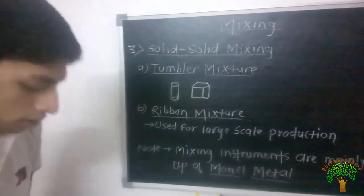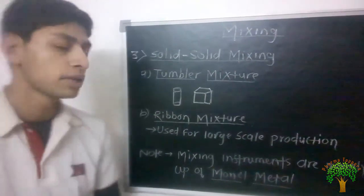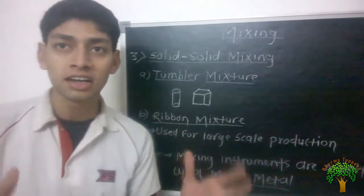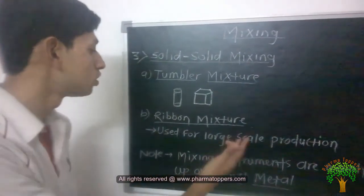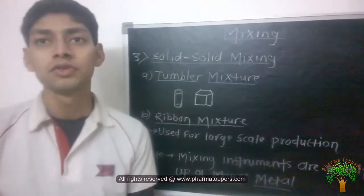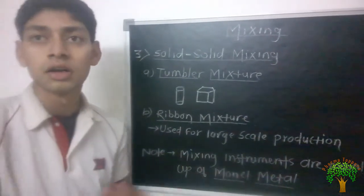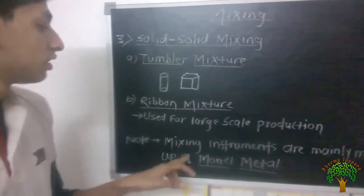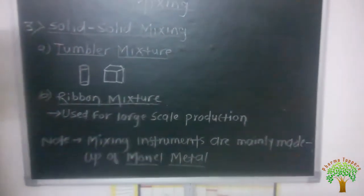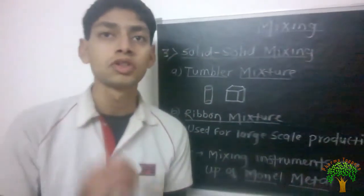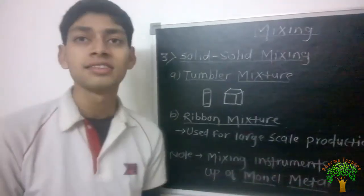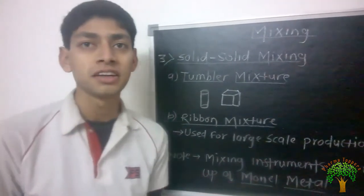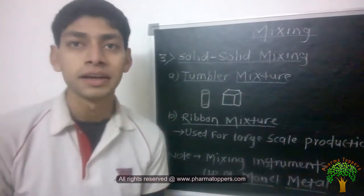But in case when mixing quantity is very large, then it is mainly used in ribbon mixing and it is mainly used in tooth powder preparation. One note is there: that mixing instruments are mainly made up of the monel metal, so it is most important. The instruments are mainly made up of stainless steel but it is mainly made up of the monel metal.